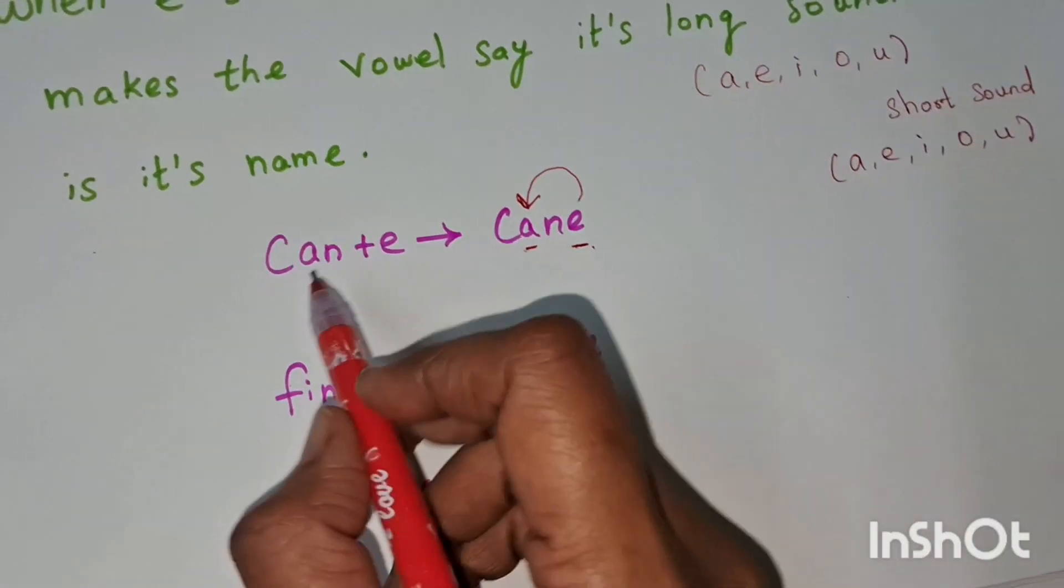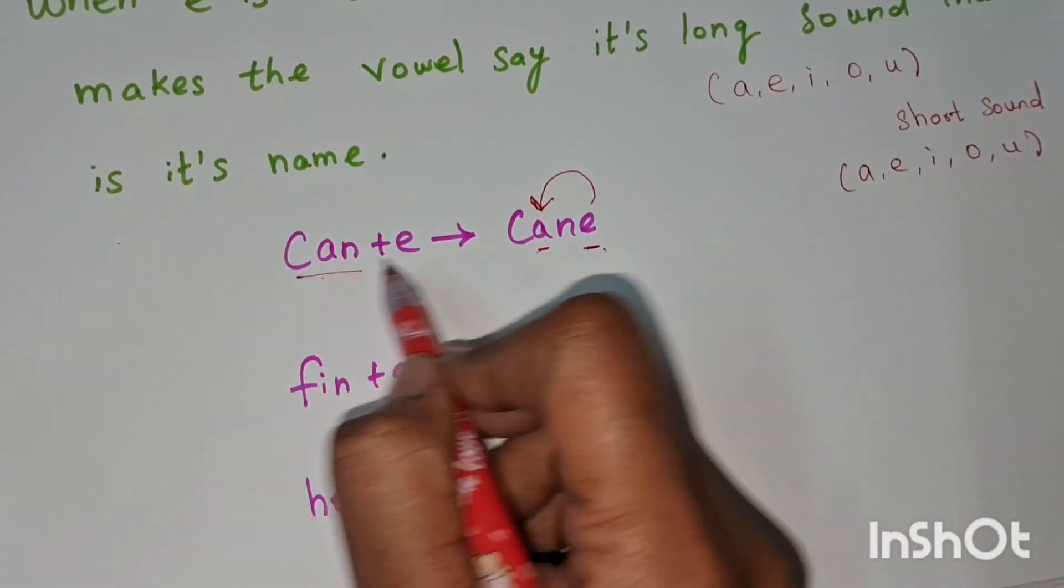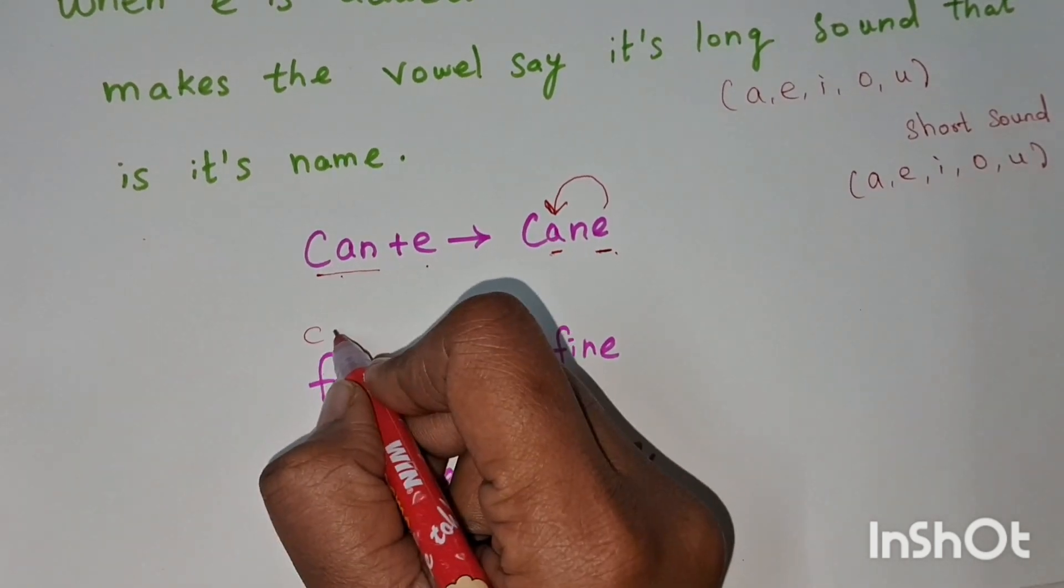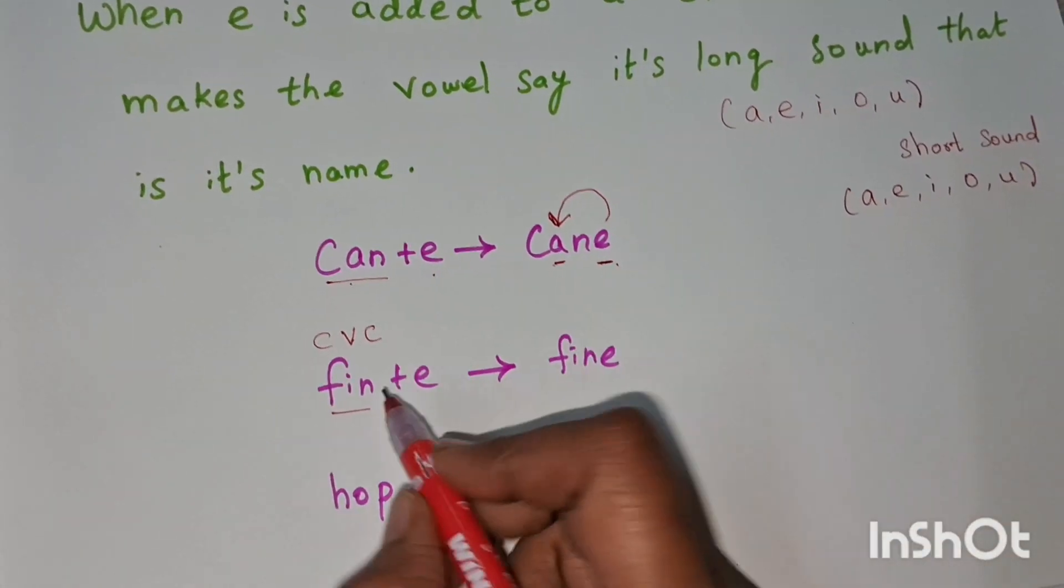Coming to the magic e. This is can. When you add e, it becomes cane. This is fin - that's CVC: consonant, vowel, and consonant. Fin.